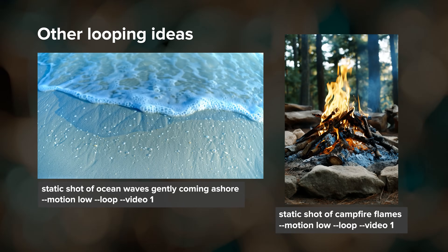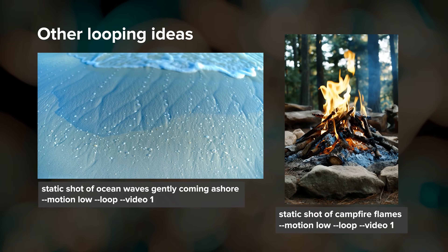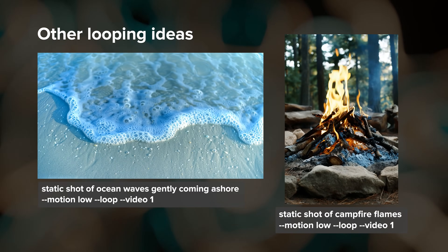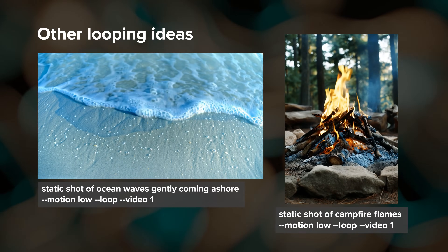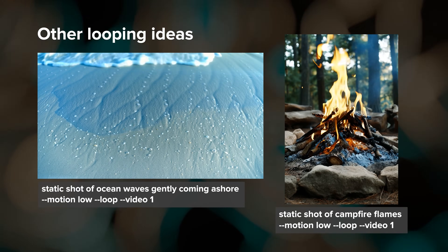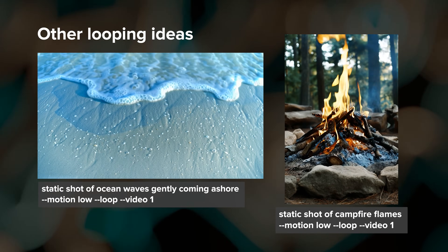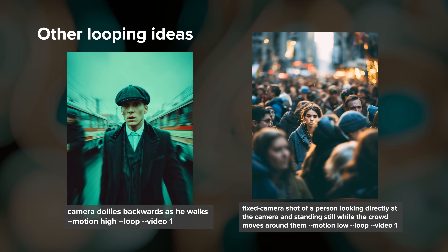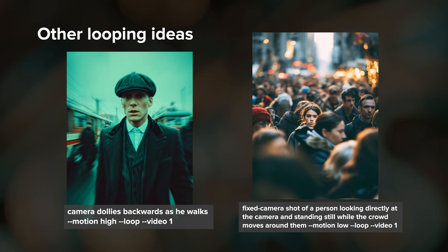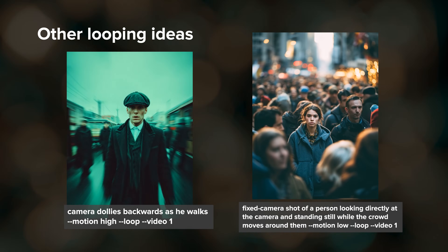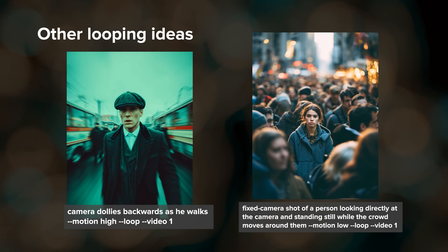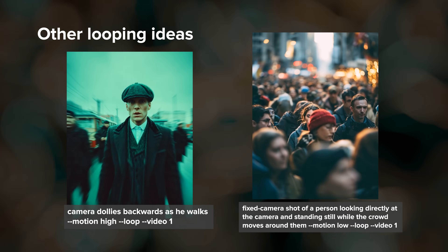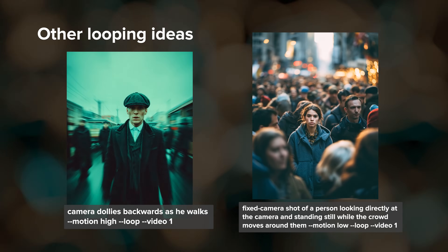Creating environmental loops such as with moving water or fire can be really satisfying. Try something like ocean waves rolling ashore, a raging river, or a campfire. Or maybe you want some chaotic and busy scenes such as city traffic or crowds moving around a person. You can also apply looping to extended videos, and I'll show you an example of that in a minute.